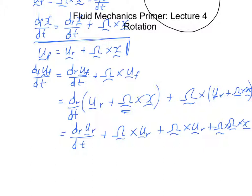So now I'll simplify this first, and then I'm going to substitute it into the Navier-Stokes equation. We've got dr ur/dt, we've got 2 omega cross ur—this is going to be my Coriolis force, by the way—plus omega cross (omega cross x).